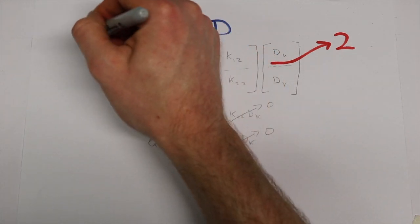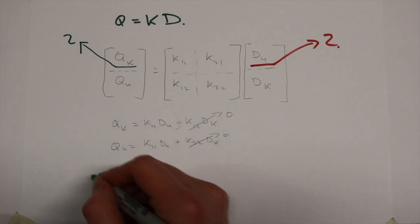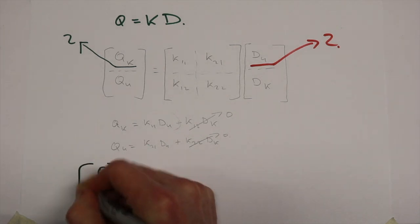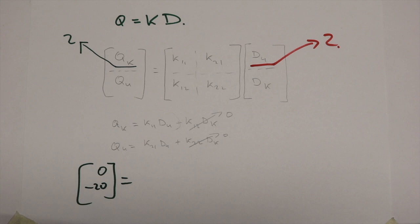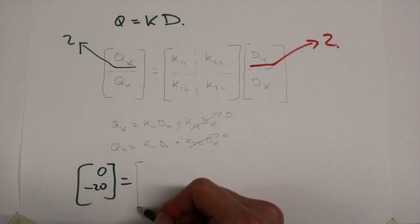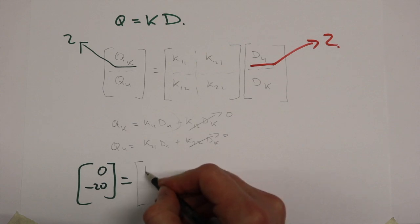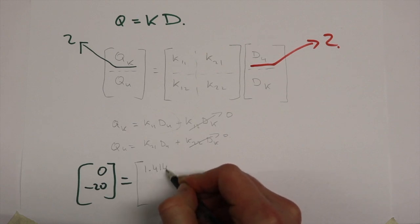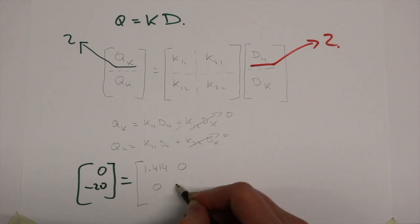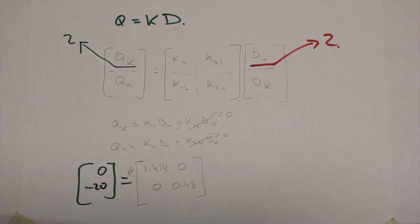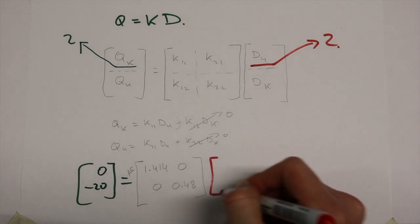In our case we have two unknown displacements and two known forces. So applying numbers to this we get 0 and minus 20 for QK equals AE multiplied by 1.41400 and 0.48, which is the top 2 by 2 of our structure matrix. This is multiplied by D1 and D2, our unknown displacements.